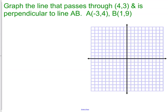Well, let's put line AB on our graph first. It's at negative three, four, so we go left three and up four. The second point is at one, nine, so we go right one, then up nine. Now we connect our dots, and we have our first line.